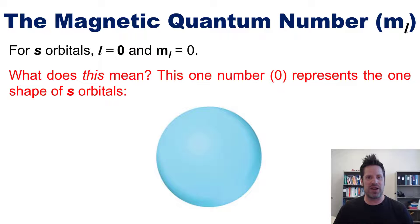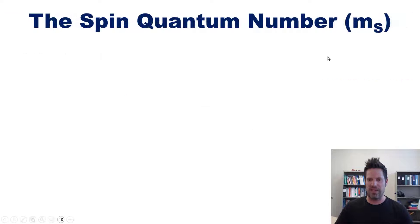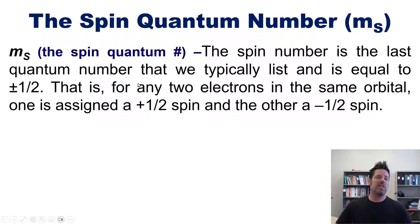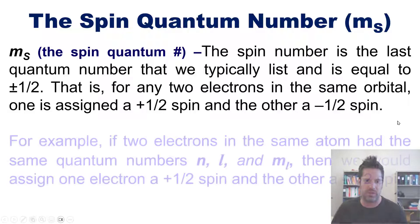Let's go on to the spin quantum number, m sub s. This quantum number is the last quantum number that we typically list and is equal to plus or minus one-half. For any two electrons in the same orbital, one is assigned a plus one-half spin, and the other a minus one-half spin.